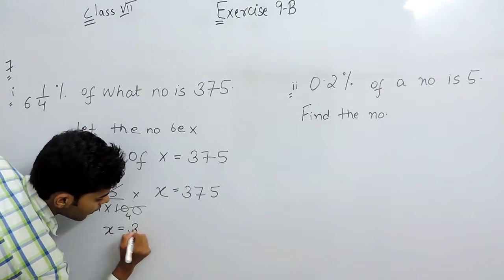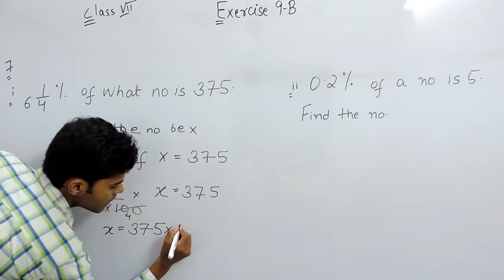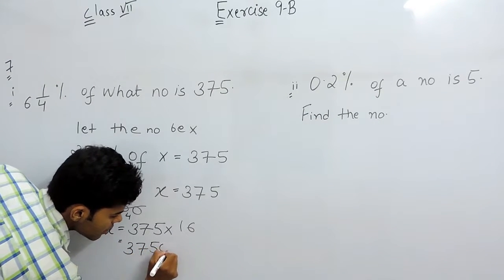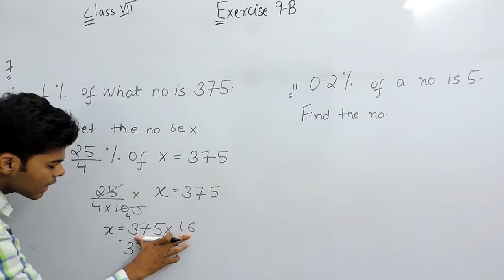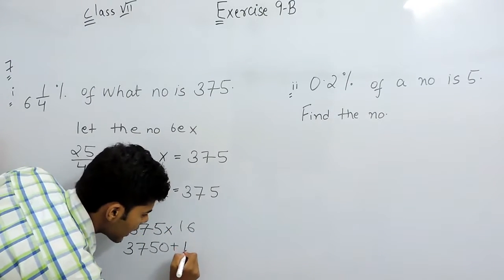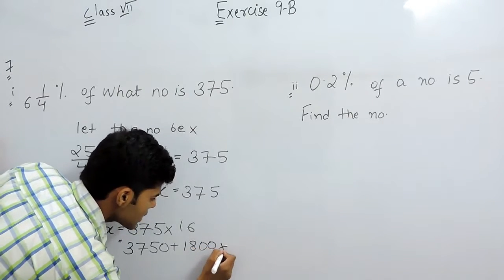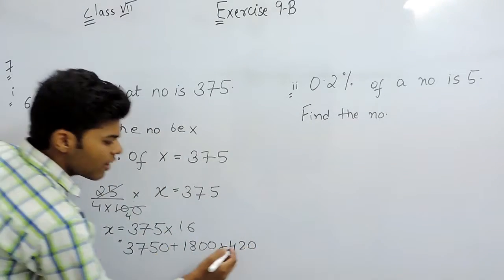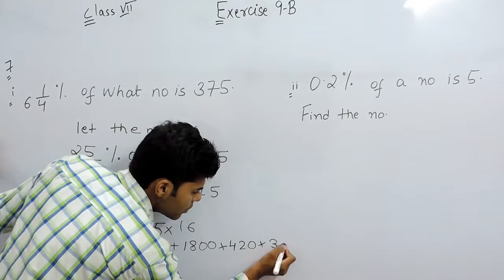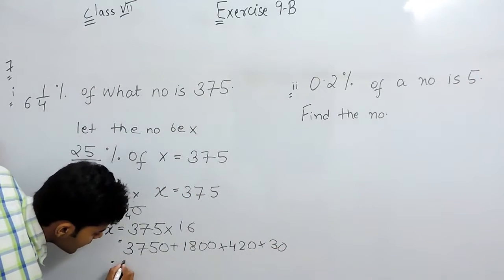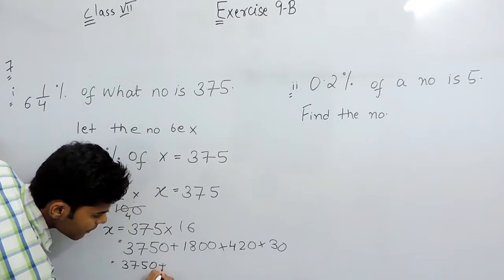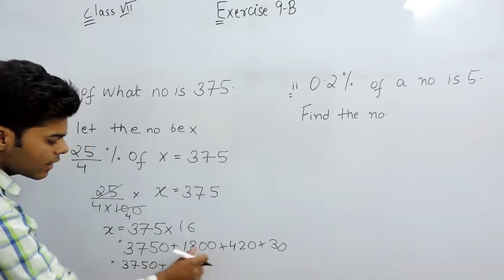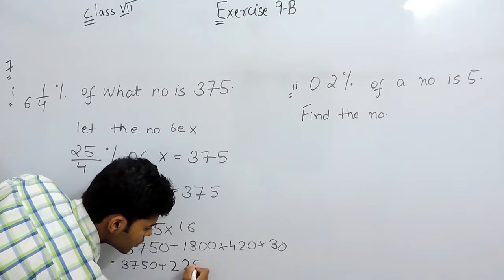We can do this calculation: 3750 plus 300 multiplied with 6, that will be 1800, plus 70 multiplied with 6, that will be 420, plus 5 multiplied with 6, that will be 30. So it will give us 3750 plus 450 plus 1800, that will be 2250.